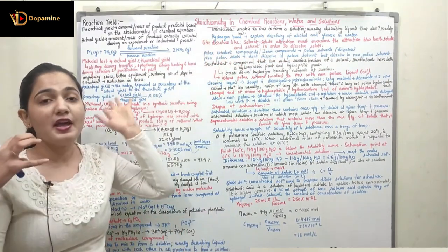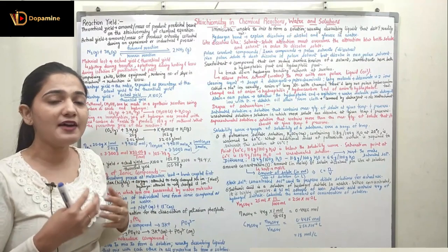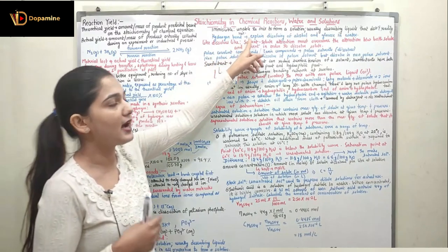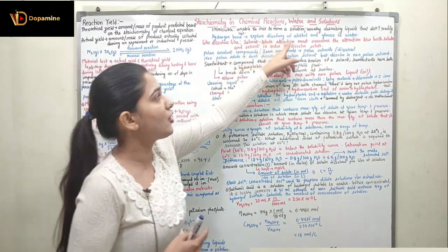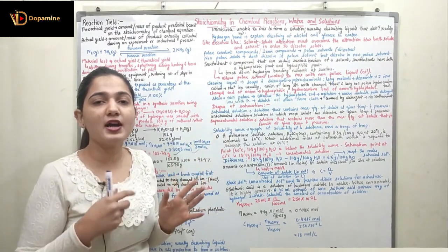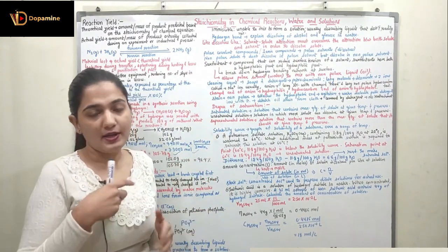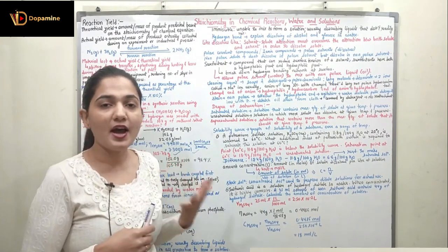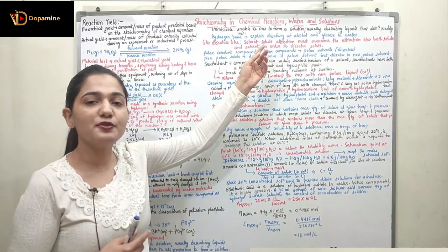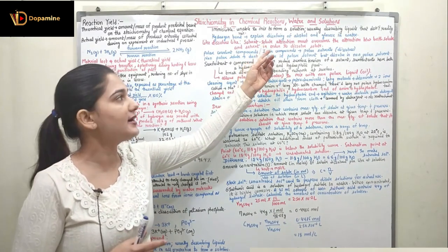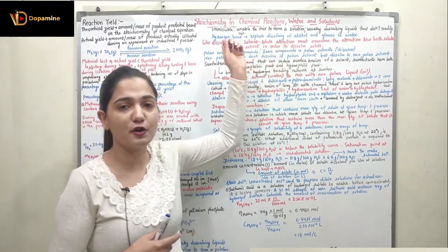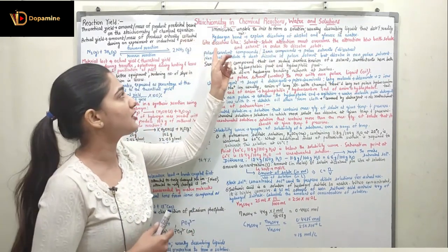Coming to hydrogen bonds: some molecular compounds combine with the help of hydrogen bonds. Hydrogen bonding explains the dissolving of alcohol and glucose in water. Alcohol and glucose are molecular compounds composed of carbon, hydrogen, and oxygen. The oxygen and hydrogen create a polar end that forms a hydrogen bond with the water molecule, allowing alcohol to dissolve in water via hydrogen bonding.